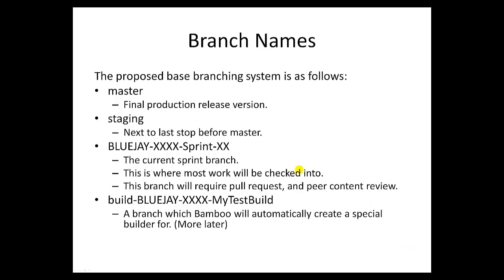Before we go much further, I wanted to speak about the names proposed for the branching system. Master, of course, is the final production release. Staging would be the next-to-last stop before we actually push to Master — it's like a test branch before we go to final production. Each branch name is written out with the JIRA project name (e.g., BlueJ), the JIRA ticket number, and the Sprint number. This is a proposed method, not necessarily how we have to do it, but we're going to try to be consistent as we move forward. This would be the current Sprint branch where most of your work would be checked in, and you would check out this branch and work on it over the Sprint.